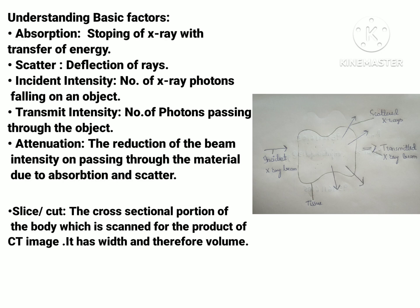Transmit intensity means how many photons are passing through an object. These two — incident and transmit intensity — are different from each other. Next is alternation, which means the reduction of the x-ray beam intensity on passing through an object or material, due to absorption and scatter. The intensity of the x-ray beam is reduced when there is absorption or scattering of the beam.